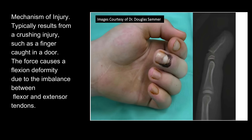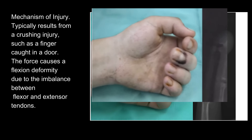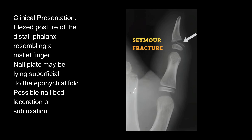The mechanism of injury typically results from a crushing injury, such as a finger caught in a door. The force causes a flexion deformity due to the imbalance between the flexor and extensor tendons.